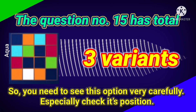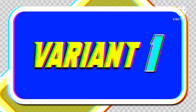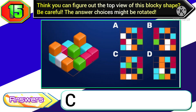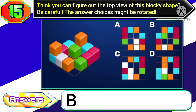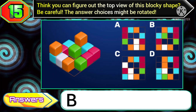Question number 15 has a total of three variants, so you need to see the options very carefully and especially check the position. In variant 1 of this question, the correct top view of this blocky shape is in option C, so you need to choose option C. Now in variant 2 of this question, the correct top view is now in option B, so you need to choose option B.